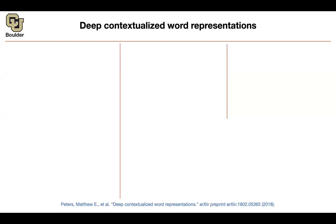This paper expands upon word representations. Previously, per each word in our dictionary we had one vector, meaning each word has only one meaning. But words change meaning according to context — for instance, 'bank' has a different meaning when talking about a river bank versus a money bank. If you assign only one vector per word, you associate only one meaning. The idea here is to have multiple meanings depending on context. The model is called ELMo: Embeddings from Language Models.